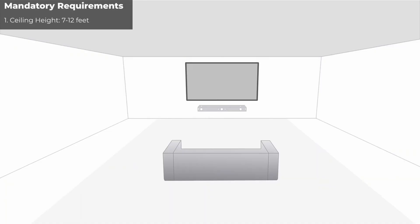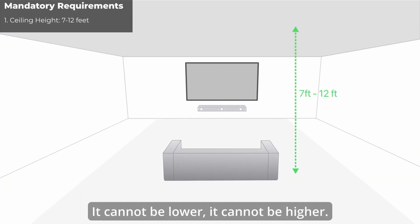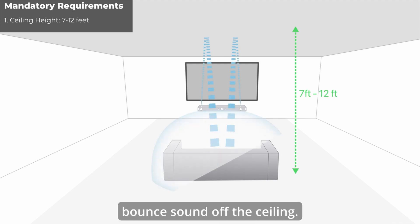The first is ceiling height. Ceiling height should be 7 to 12 feet. It cannot be lower, it cannot be higher. Atmos soundbars use up-firing speakers to bounce sound off the ceiling. If the ceiling is too low, the sound hits too soon and you lose the spacious effect. If it's too high, the sound disperses before it reaches your ears.